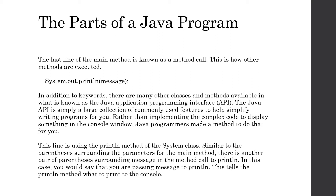In addition to keywords, we have other classes and methods available in what is known as the Java Application Programming Interface, or Java API. The Java API is a large collection of commonly used features, and its primary purpose is to help simplify writing programs. Rather than having to reinvent the wheel and implement complex code to display something on the console window, the Java programmers made a method that does all of that for you. They've already handled implementing the println method - all you have to do is call it. The line we're looking at uses the println method of the System class. You can see the word System with a capital S at the beginning, indicating we're getting this method from another class somewhere in the Java API.